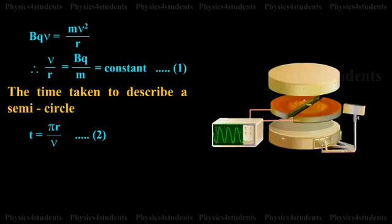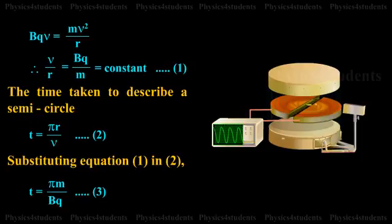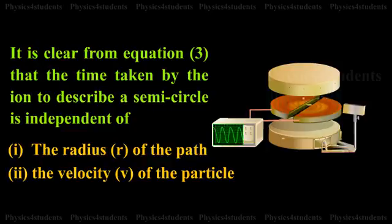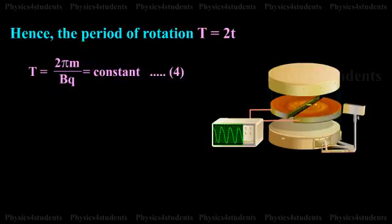The time taken to describe a semicircle T is equal to pi R by V. Substituting equation 1 in 2, T is equal to pi M by BQ. It is clear from equation 3 that the time taken by the ion to describe a semicircle is independent of the radius R of the path and the velocity V of the particle. Hence,